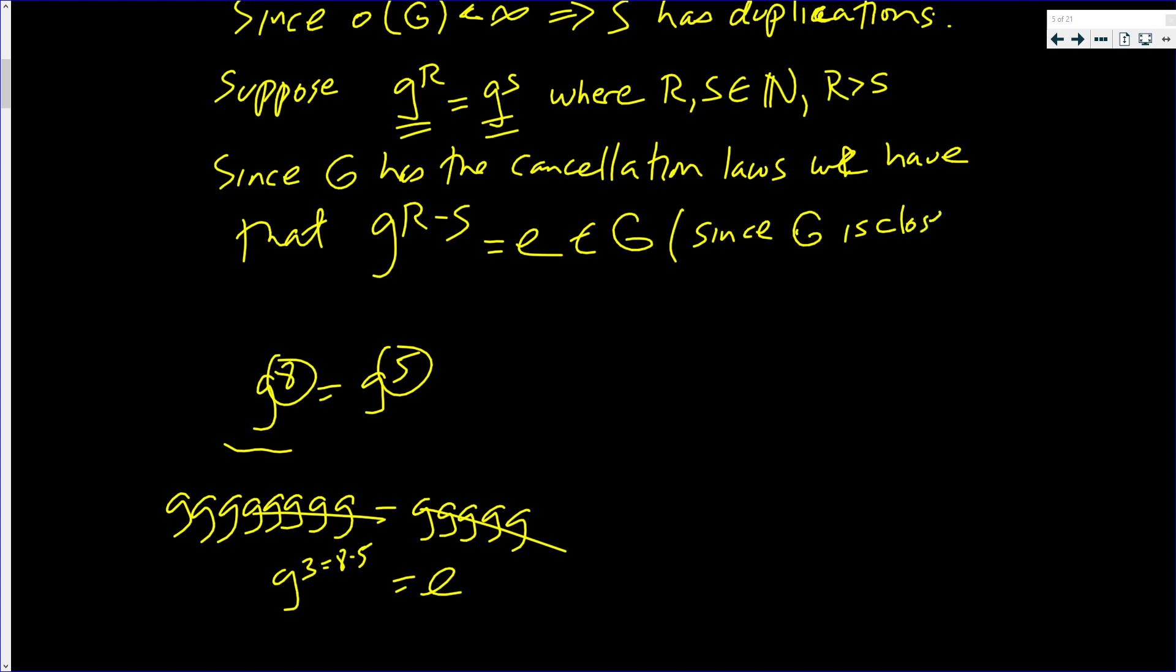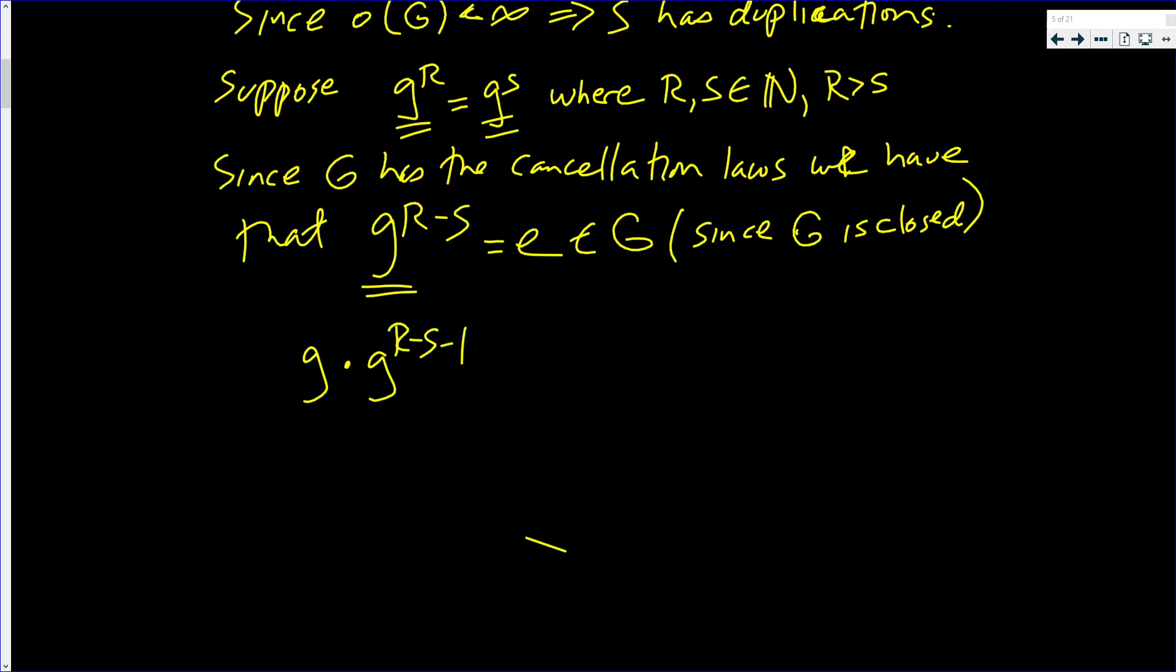Since G is closed. But just like in the last video, if I multiply both sides by, well, if I break off a g from here, I have g times g to the R minus S minus 1 is equal to e. But that implies that the left inverse, let's say left, left inverse of g is g to the R minus S minus 1. And I'm no expert on this, but maybe that's called the right inverse. Okay, so something's boggling. Okay, so I found the right inverse of g.